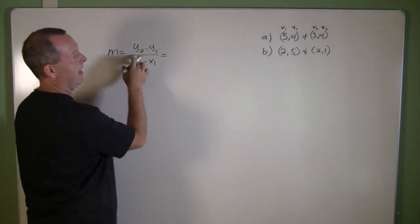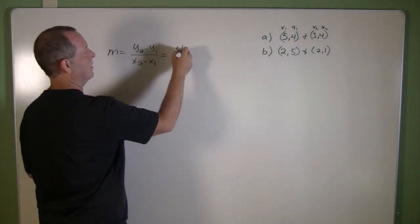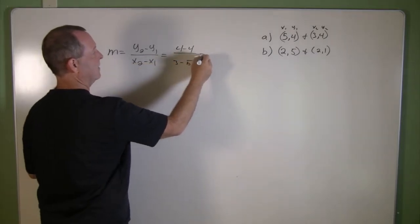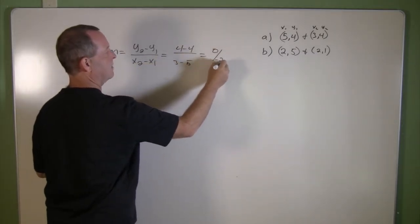Change of my y's, let's put those in, that's 4 take away a 4, over a 3 take away a 5, equals 0 over negative 2.